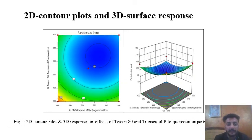This is the contour plot for particle size. Whenever there is increase in GMS to capryol ratio, there is increase in particle size. But when we go to the outside region, whenever there is increase in Tween 82 to transcutol, particle size is decreasing.